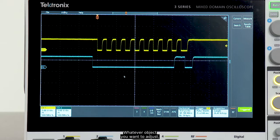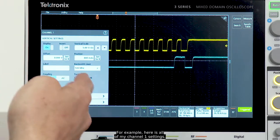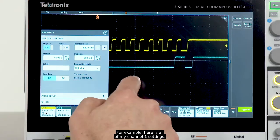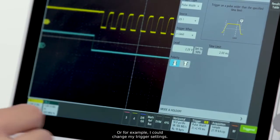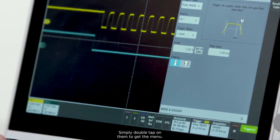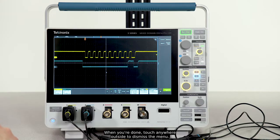Whatever object you want to adjust, you simply double tap its object on the display. For example, here is all of my channel 1 settings, or I could change my trigger settings. Simply double tap on them to get the menu. When you're done, touch anywhere outside to dismiss the menu.